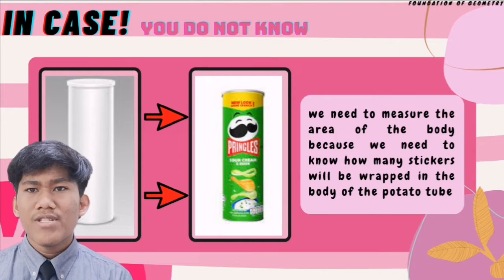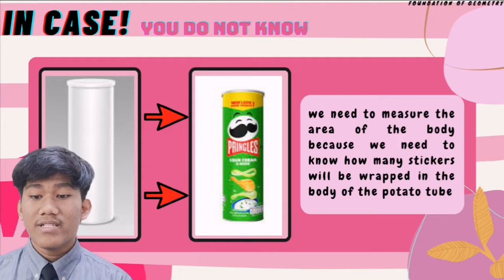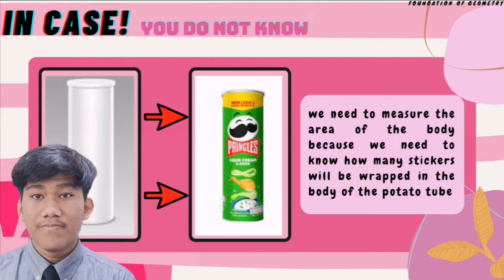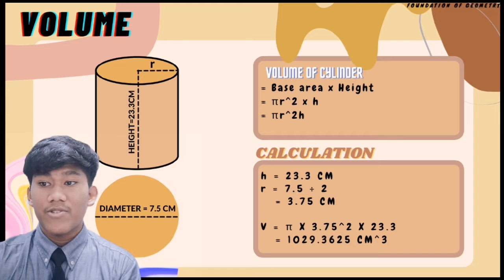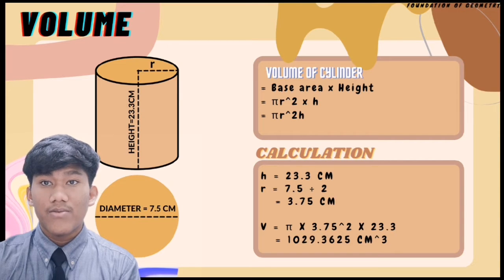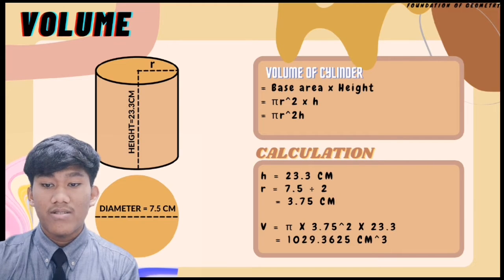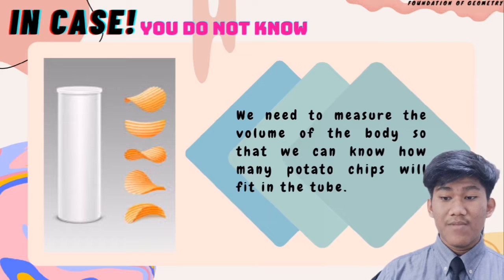In case you are wondering why we need to measure the area of the body — we need to know how many stickers will be wrapped around the body of the potato chip tube. To measure the volume of the cylinder, we use the formula base area multiplied by height, which is πr²h. Given h = 23.3 cm and r = 3.75 cm, the volume = π × (3.75)² × 23.3 = 1029.3625 cm³. This tells us how many potato chips will fit in the tube.